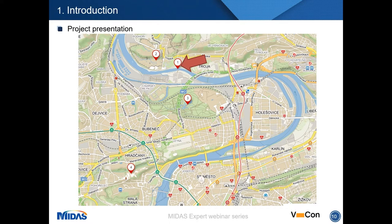Here you can see the exact position of the bridge in Prague — it is in the northern part. Number two marks the Prague Zoo, number three is the Stromovka Park, one of the biggest parks in Prague, and number four is the Prague Castle.